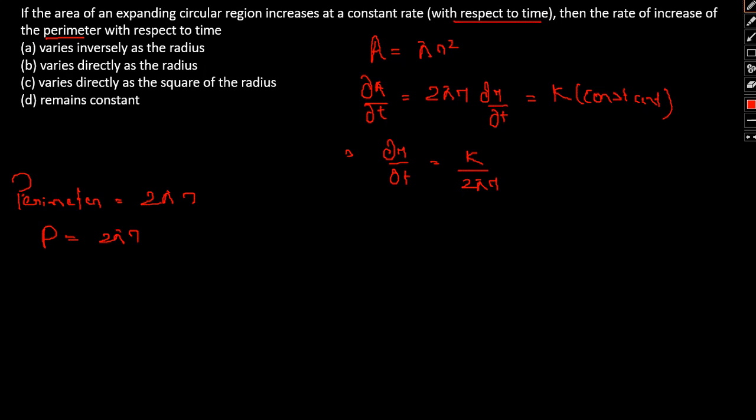If we differentiate this with respect to t, then we have dP/dt = 2π(dr/dt). So dr/dt, we can substitute with k/(2πr). 2π times 1/(2πr) will cancel, so we have dP/dt = k/r.